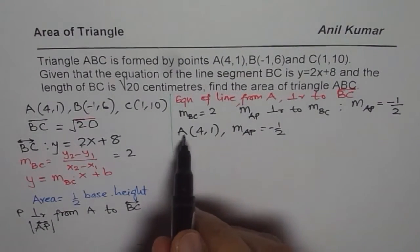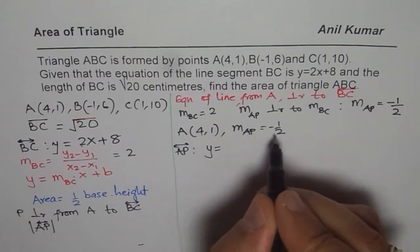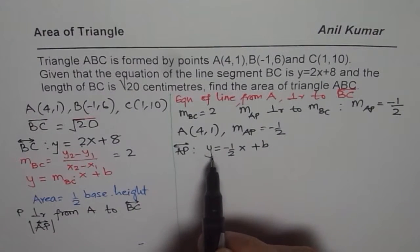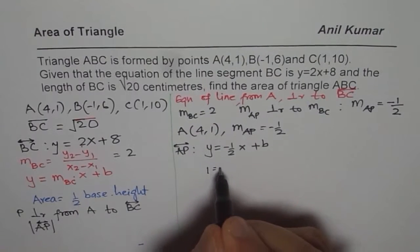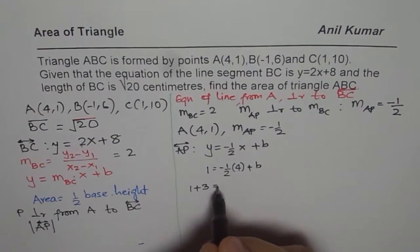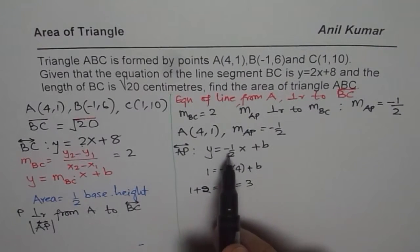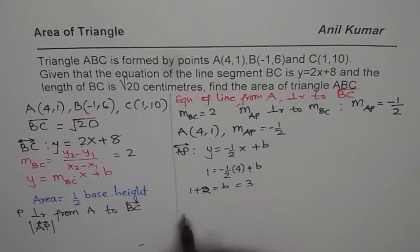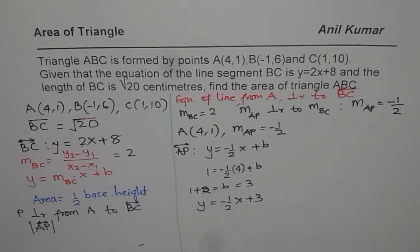Using point-slope form, the equation of line AP is y = -½x + b. To find the y-intercept, we substitute point A(4,1): 1 = -½ × 4 + b, which gives 1 = -2 + b, so b = 3. Therefore the equation of line AP is y = -½x + 3.